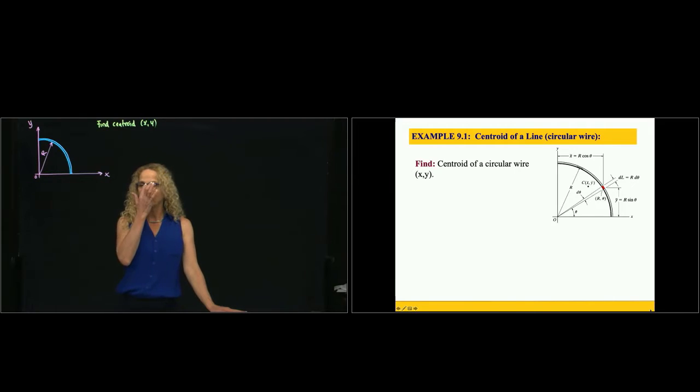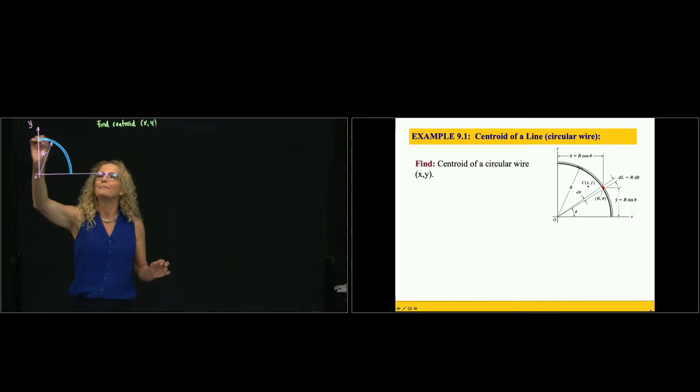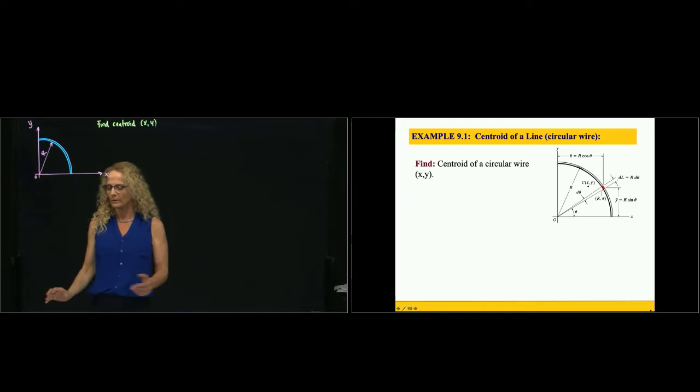Hi, this is program 9.1, and we'd like to find the centroid of this circular wire, or the wire that is one line bent in a semicircular way.